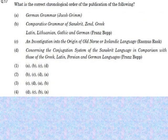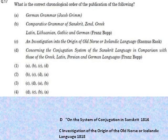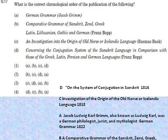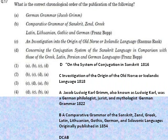The next question involves a chronological ordering of some important world texts, including German Grammar, Comparative Grammar, and Investigation into the Origin of all Norseans concerning the conjugation system. According to me, the correct chronological order is DCAB — D published in 1816, C in 1818, A in 1822, and B in 1854. However, I do not see any option that says DCAB, so I think the benefit of doubt should be given to students over this question.